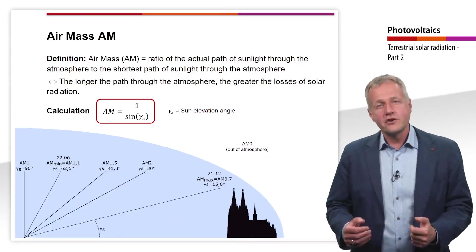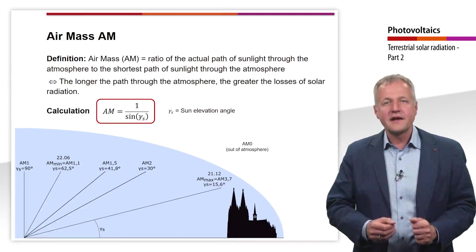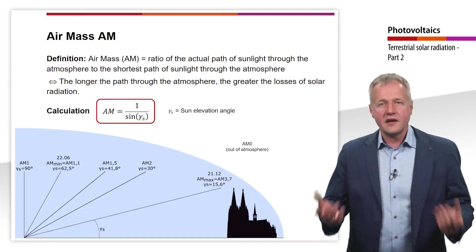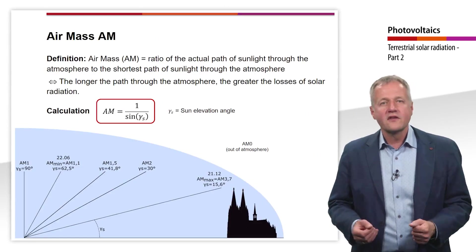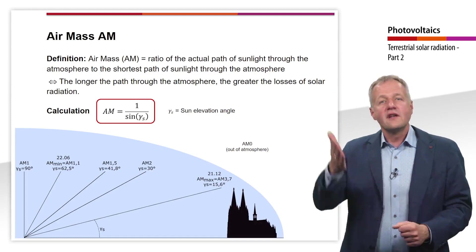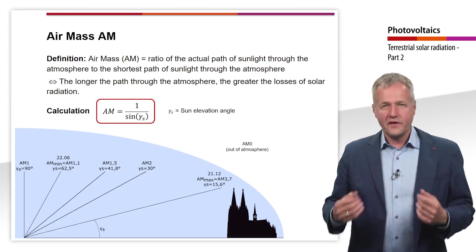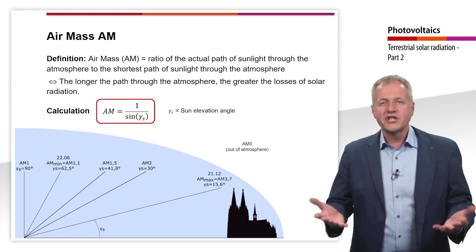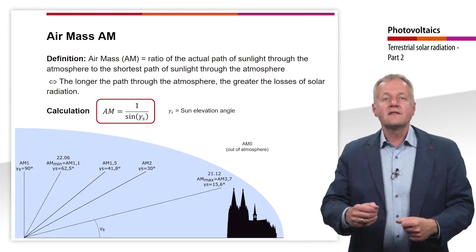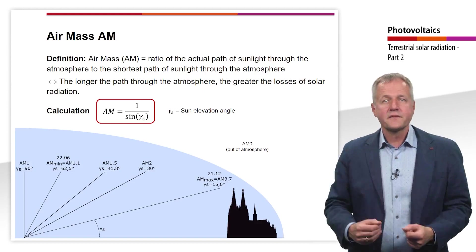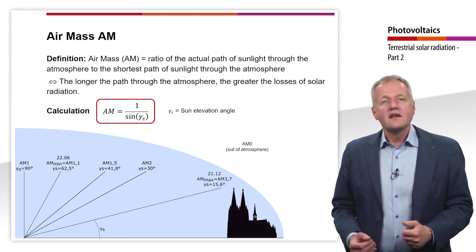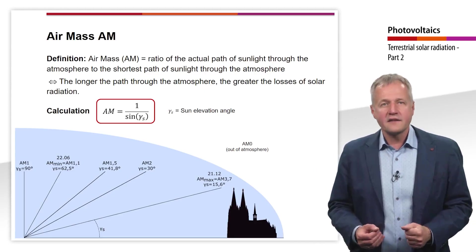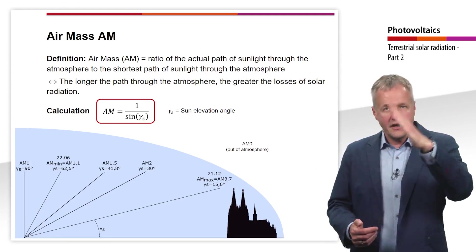The air mass is the ratio of the actual path of sunlight through the atmosphere to the shortest path of sunlight through the atmosphere. In other words, the larger the air mass, the larger the path through the atmosphere, meaning that losses of solar radiation increase as the air mass increases. The air mass is inversely proportional to the sine of γs, where γs is the sun elevation angle.